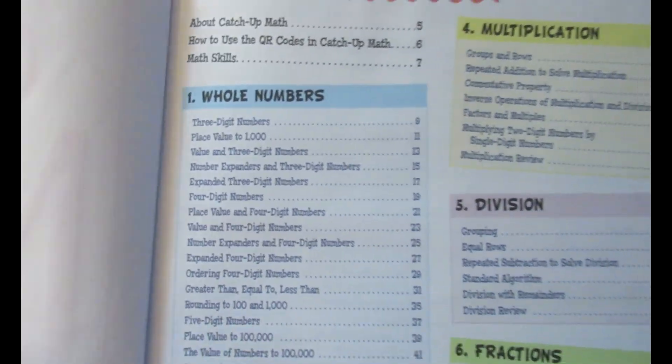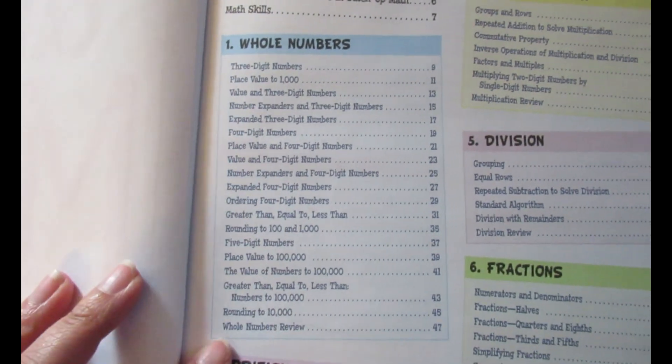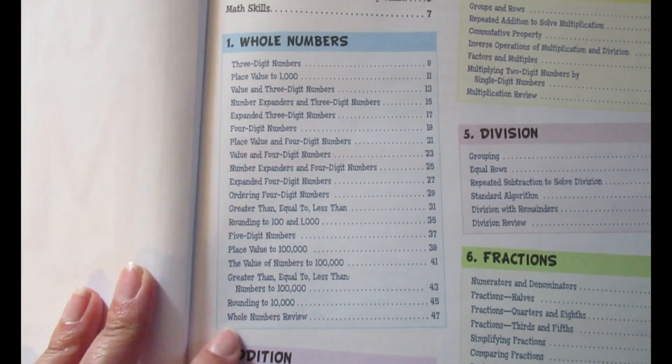Here is the table of contents. In whole numbers, we're starting with three-digit numbers and ending in rounding to ten thousand and a review.